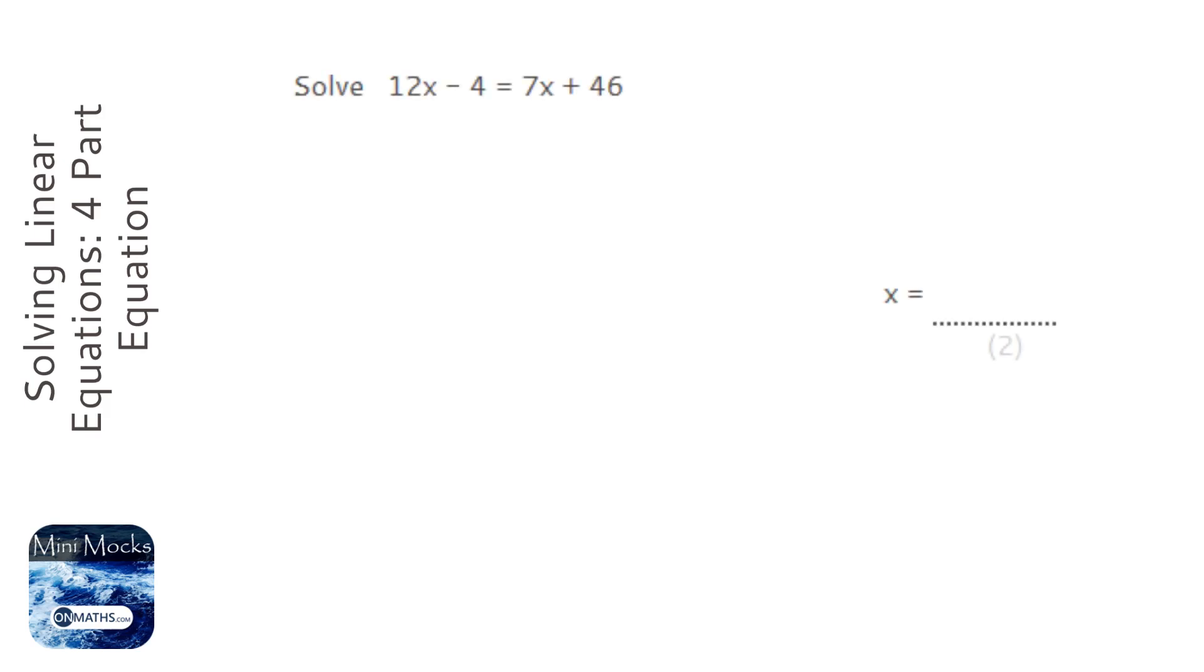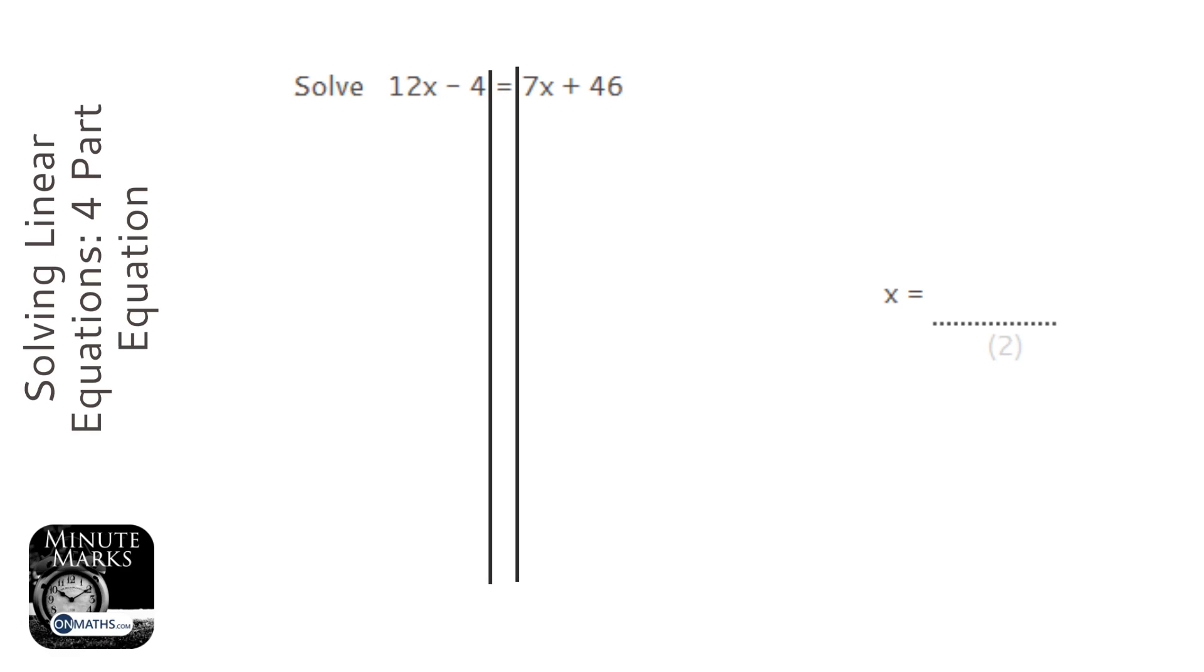Okay, so it says solve, so I'm going to put my lines down either side of the equal sign. Now the issue with this question is it has an x term on both sides. It has this 12x and it has this 7x.